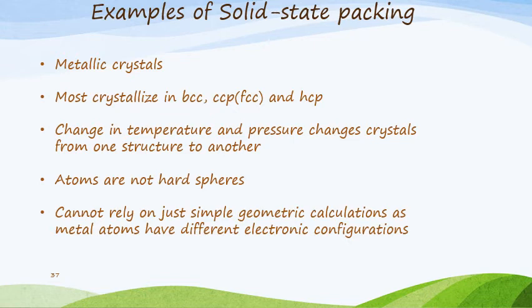There are some examples of solid-state packing. This can apply to metallic crystals, where most of them crystallize in body-centered cubic, cubic close-packed or face-centered cubic, and hexagonal close-packed structures. If we change the temperature and pressure, we will probably change the crystal from one structure to another — I'll deal more with that in a later part of this unit. Atoms are essentially not hard spheres; they are somewhat malleable because they have electron clouds which can move, and we can't always rely on simple geometry calculations as metal atoms have different electronic configurations.